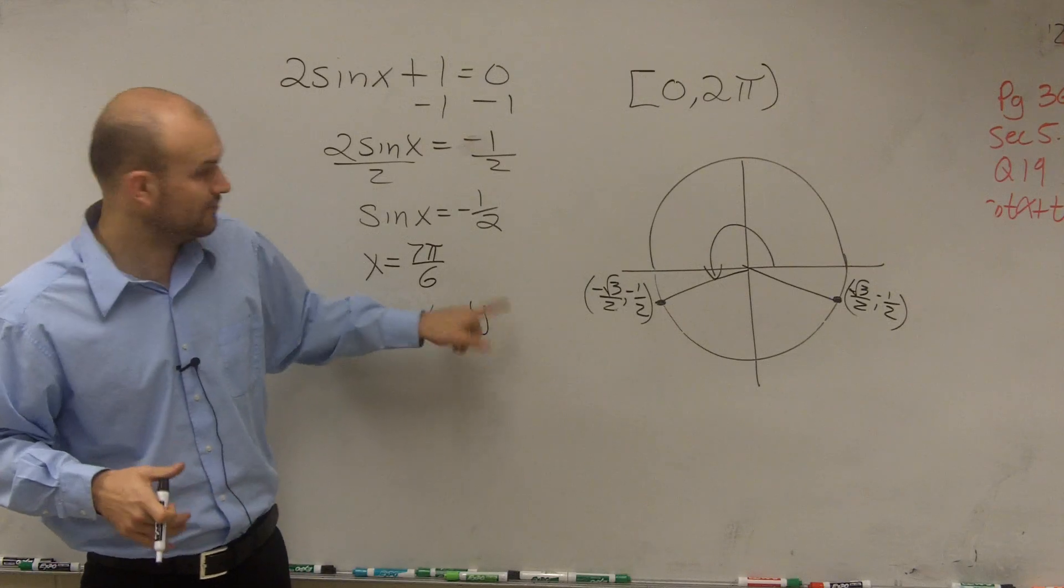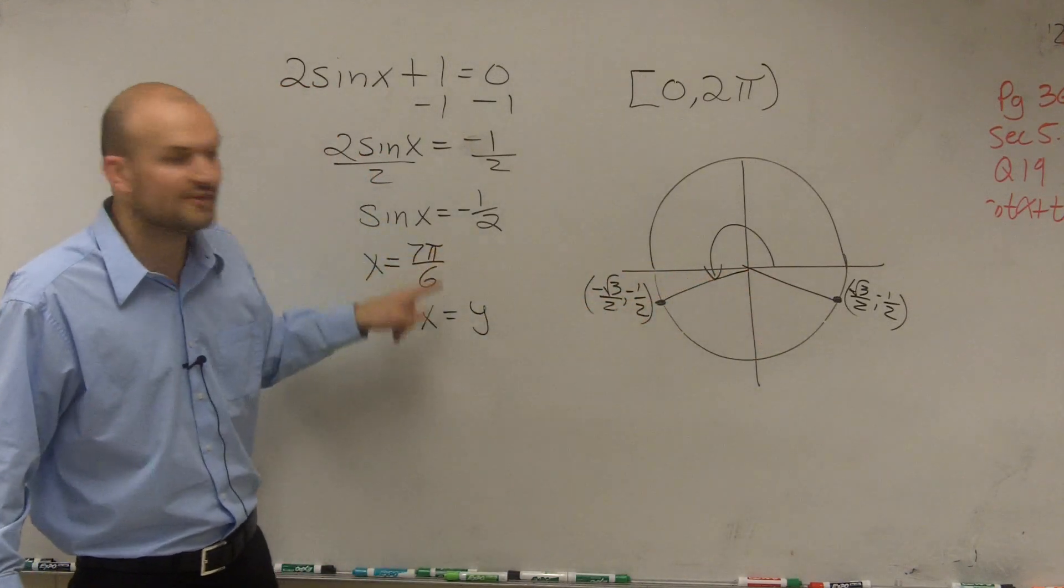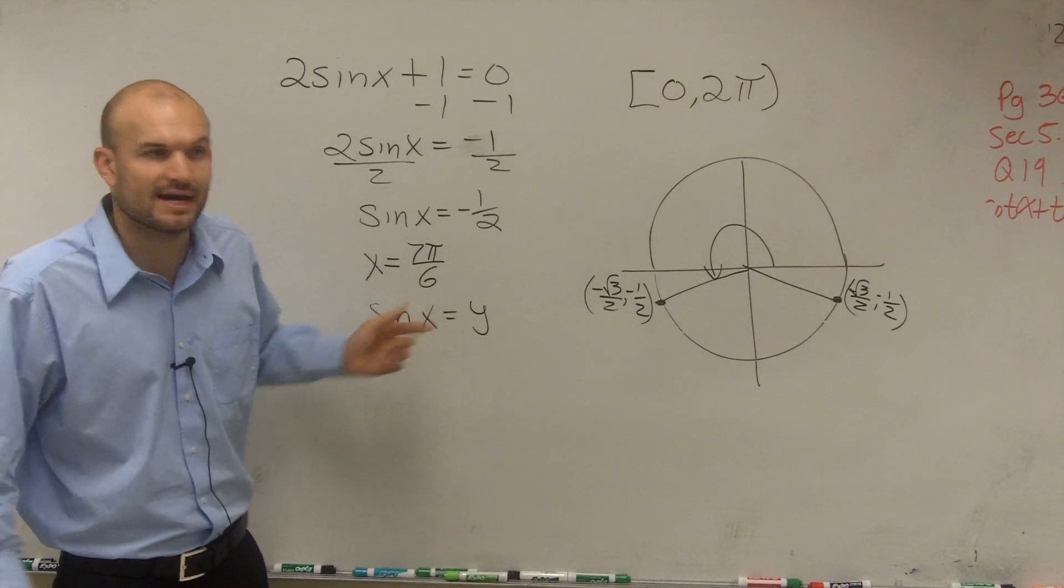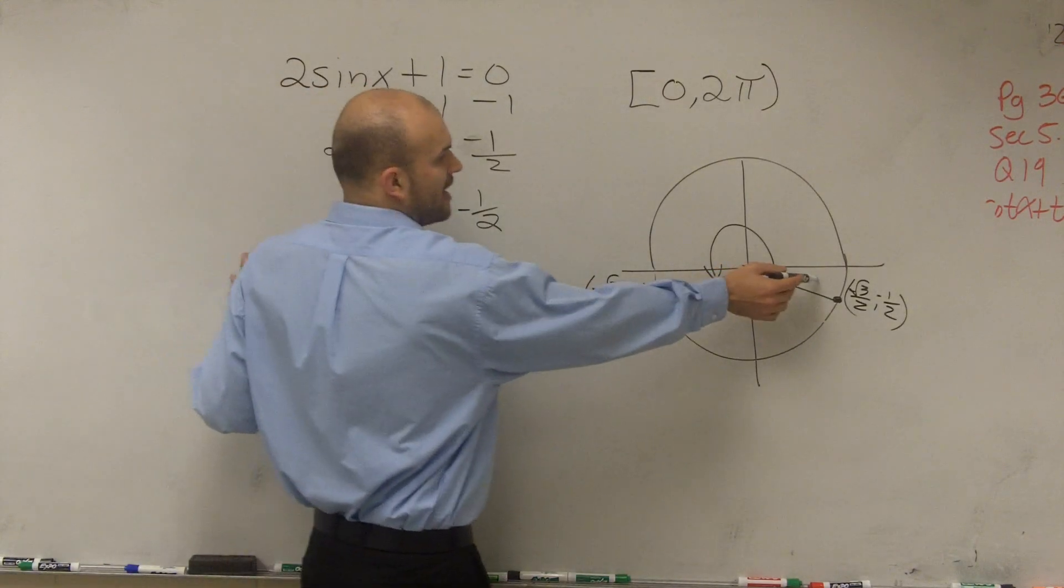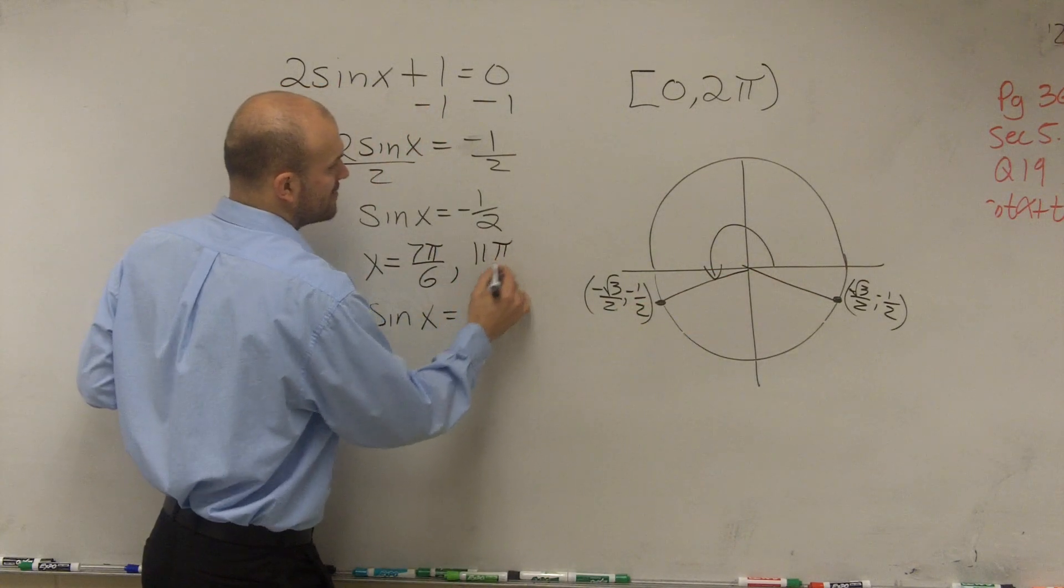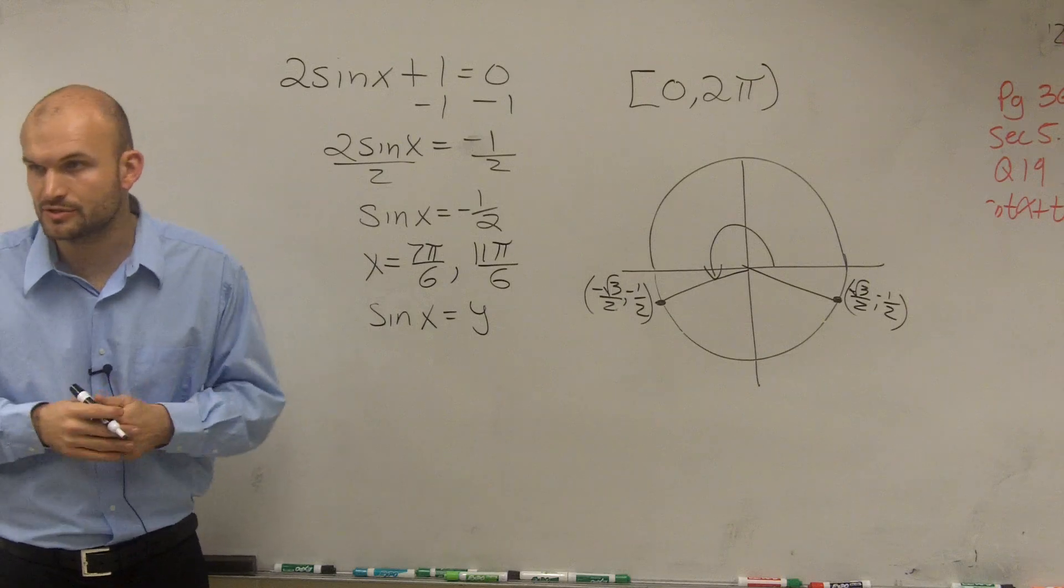So when is my y coordinate equal to negative 1 half? Well, it's equal at these two angles. So we just need to figure out what is that angle that we're trying to find. So it's going to be 7π over 6, and then this last one, which would be 11π over 6. And those are going to be your two solutions.